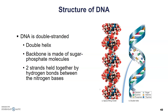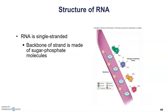You want the molecule that contains the genetic information to be really stable and resistant to damage, because you need to be able to retain that genetic information and pass it on to future generations. The structure of DNA — the double helix and the hydrogen bonding between nitrogen bases — helps that happen. This is slightly different from the structure of RNA. RNA is only single-stranded, and it still has a backbone made up of sugar and phosphate molecules.